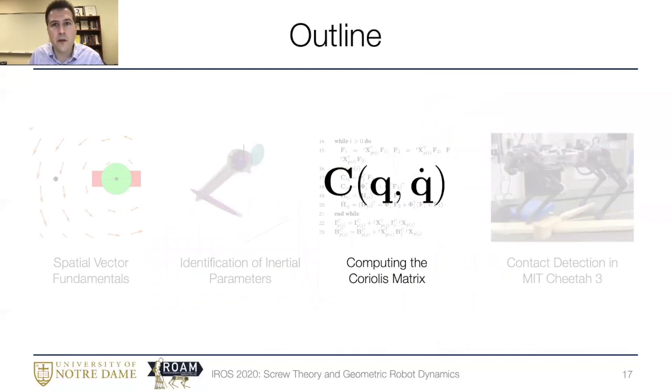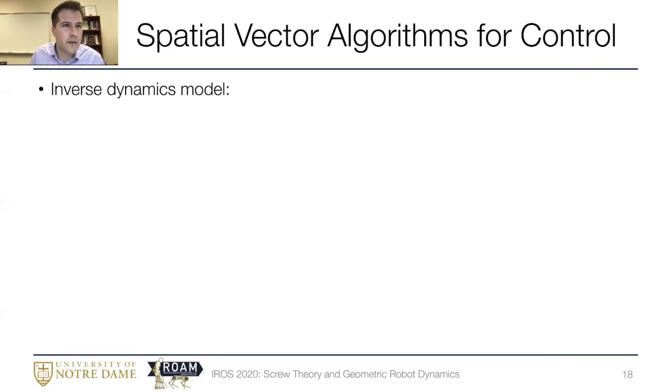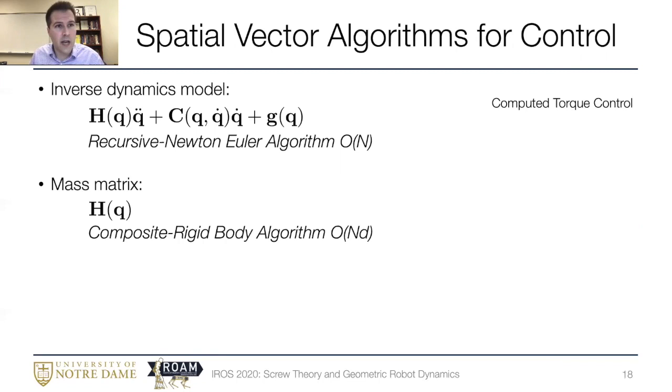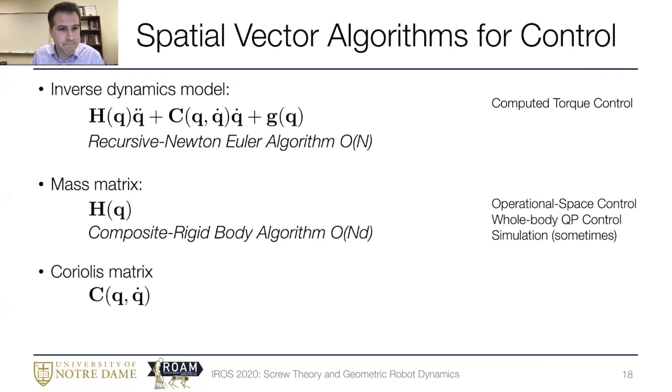All right, so now that we have these models, let's talk about how we can use them for control. The most common use, I would say probably, is the inverse dynamics model, which we can evaluate, of course, with the recursive Newton-Euler algorithm. It has computational complexity that scales linearly with the number of bodies. We might do this for computed torque control. Sometimes we don't need the whole model, though. For instance, you might just want the mass matrix. And you can compute that with the composite rigid body algorithm. That has computational complexity O of n squared, where N is the number of bodies, and D is the depth of your connectivity tree. You might need this if you're doing operational space control, or its close friend whole body QP based control, or when doing simulation, when N is small.